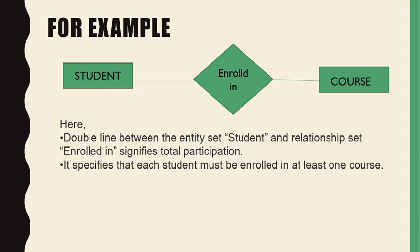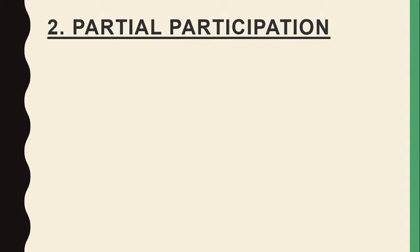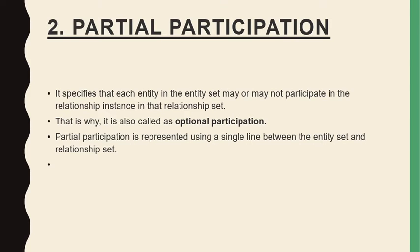That type of participation is total participation. The second participation method is partial participation. In partial participation, it specifies that each entity in the entity set may or may not participate in a relationship instance in that relationship set — meaning it is optional. They may or may not be involved in a relationship; it is not compulsory. So it is called optional participation.